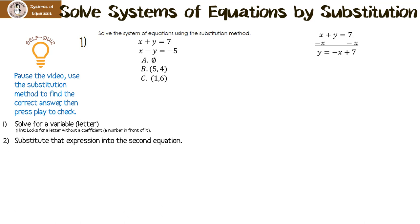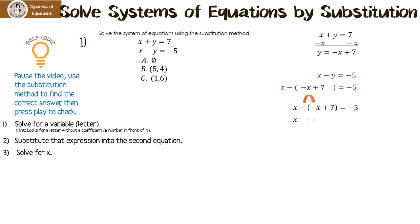Now I back-substitute into the second equation, leaving a big spot for y and putting negative x plus 7 in there. Rewriting and using the distributive property: negative 1 times negative x is positive x, and negative 1 times 7 is negative 7. Collecting like terms: x plus x is 2x. Adding 7 to both sides gives 2x equals 2, and dividing by 2 gives x equals 1.